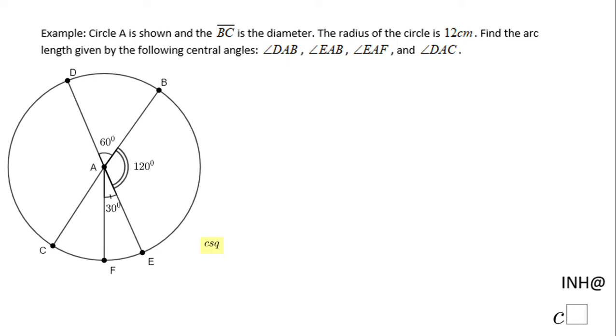Welcome or welcome back, and I Need Help at C Square. In this example we have circle A, and BC is the diameter. The radius is 12 centimeters, and we need to find the arc length.